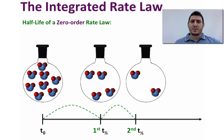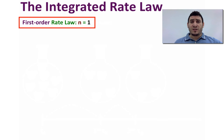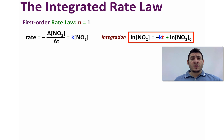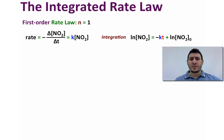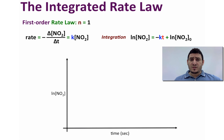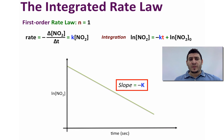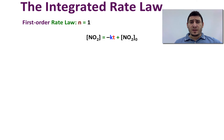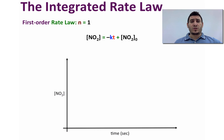Let us now discuss the first-order rate law where n equals 1. The differential rate law is: rate equals k multiplied by the concentration of NO2 to the power 1. The integration of this expression gives us: the natural log of the concentration of NO2 equals minus kt plus the natural log of the initial concentration. The plot of ln[NO2] versus time gives a straight descending line with slope minus k and y-intercept equal to the natural log of the initial concentration. Note that plotting concentration versus time for a first-order reaction gives a curve, not a straight line.